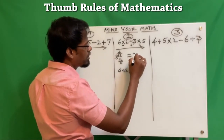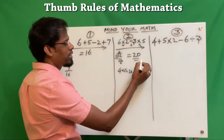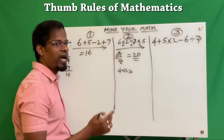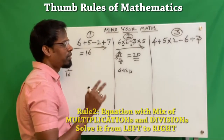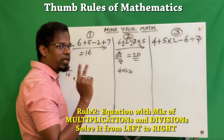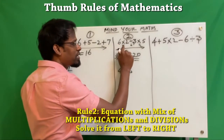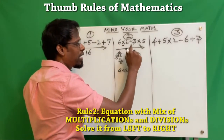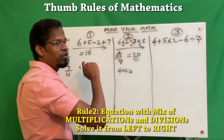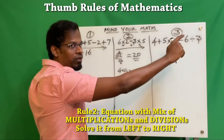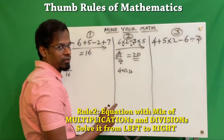— 4 times 5 is 20. So the answer is 20. That is Rule 2: when an equation has only multiplications and divisions, you just go from left to right.